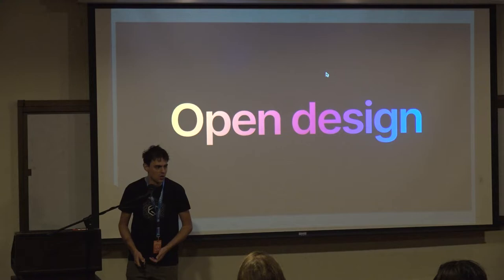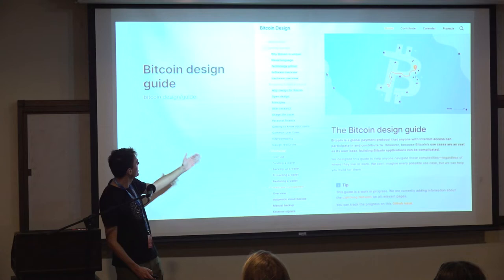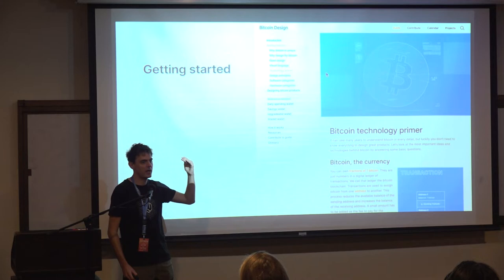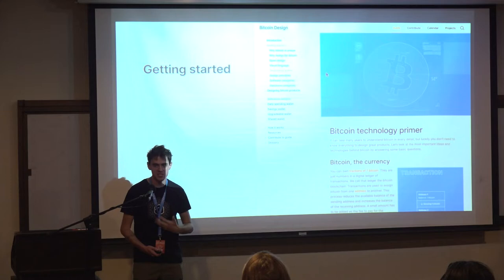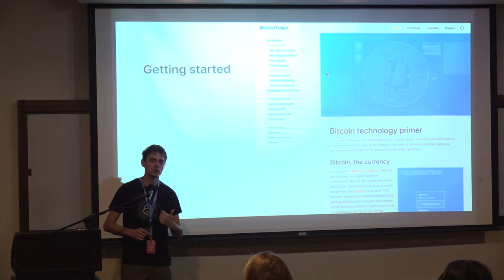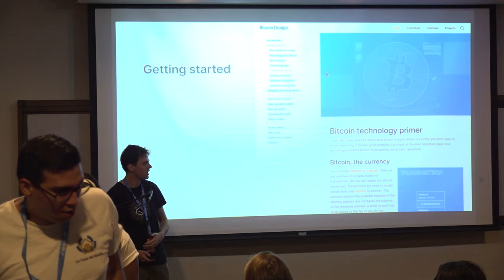The flagship project of the community is the Bitcoin Design Guide, at bitcoin.design/guide. This is kind of like human experience principles for Bitcoin projects. There's a Getting Started section with tech primer content for designers who may not be up to speed with the Bitcoin tech stack, and some core principles — because a lot of the work we do is around self-custodial products that preserve the user's privacy, are inclusive, and are censorship resistant.